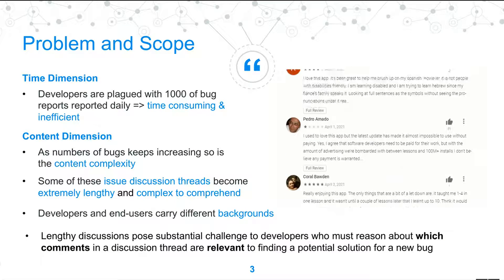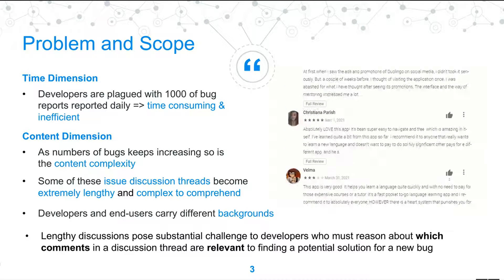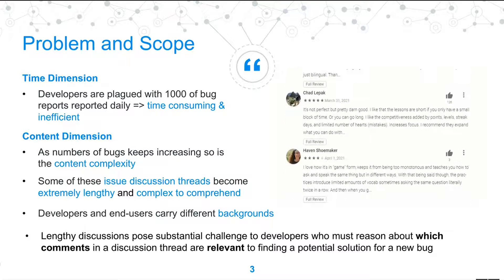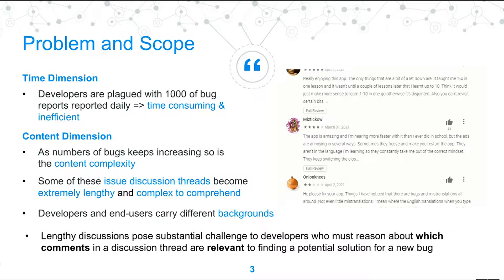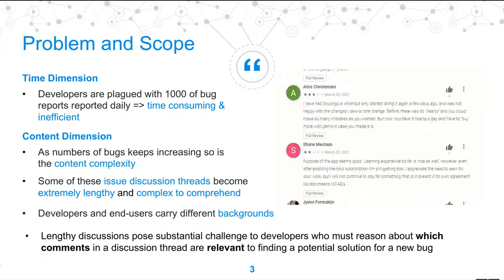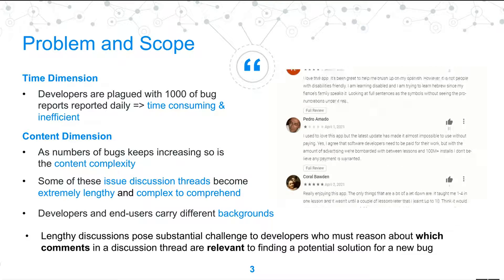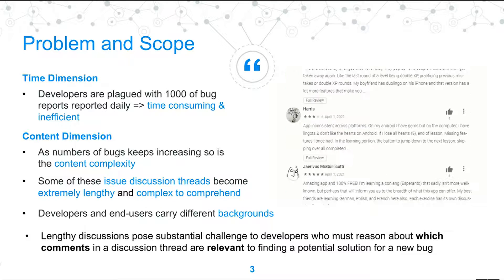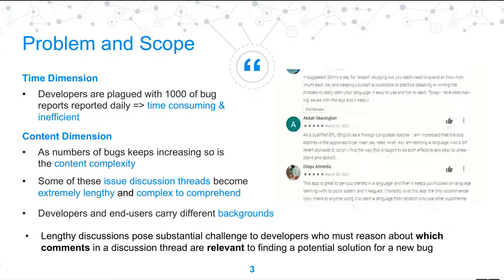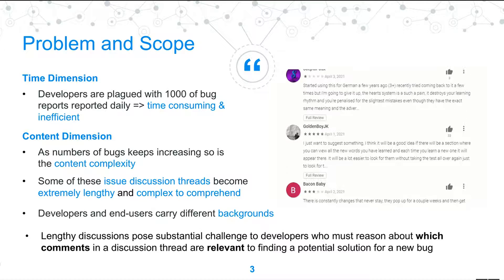The time dimension refers to developers being plagued with thousands of bug reports daily, making it a time-consuming, inefficient, and ineffective task to keep up. The content dimension is one we will also focus on — as the number of bugs keeps increasing, so does the content complexity, because issue discussion threads become extremely lengthy and complex. Developers and end-users may carry different backgrounds, and lengthy discussions pose substantial challenges to developers who must determine which comments are most relevant.